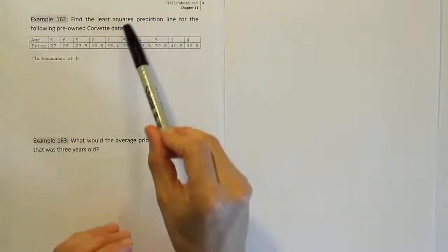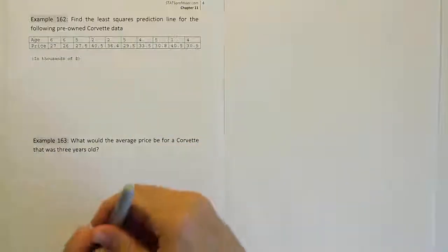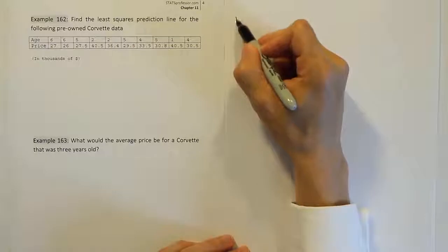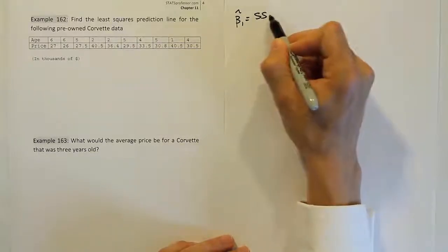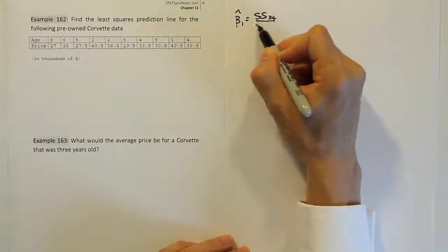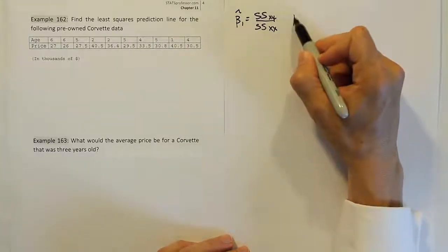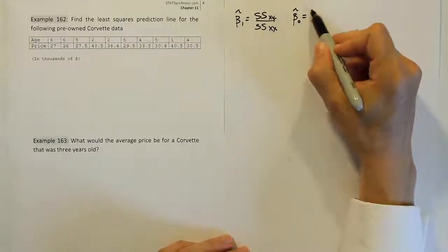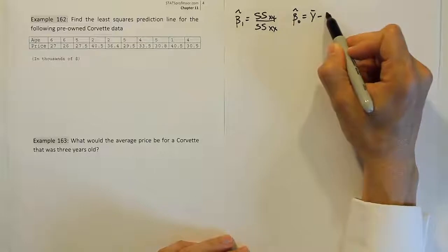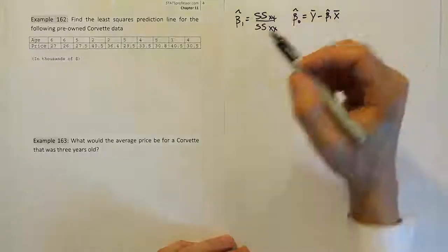They asked us to find the least squared prediction line. So that means we need to estimate the slope. We need to come up with a formula for beta 1 hat, which is the sum of squares for xy divided by the sum of squares for xx. And then we also need to come up with the y-intercept estimator. So we're going to have, in that case, y bar minus the slope estimator times x bar.